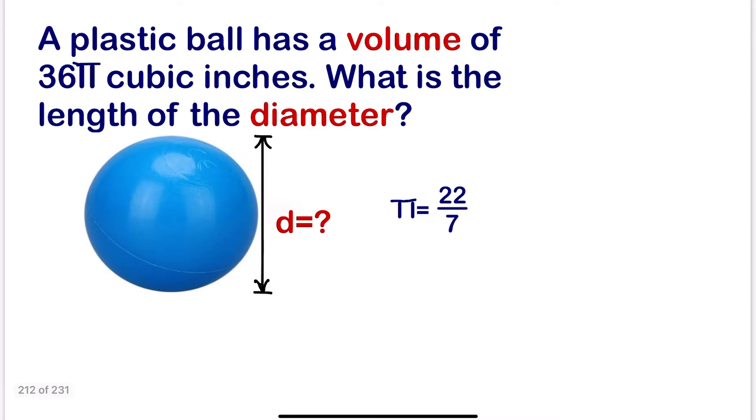Initially, we know that the diameter d equals two times the radius, because the radius is half of the diameter. So if we have the radius and multiply it times two, we are going to have the diameter.